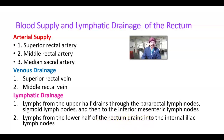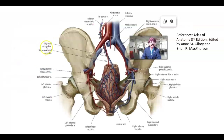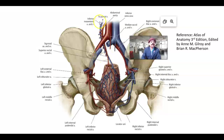Here we are seeing the blood vessels. The superior rectal artery is a branch of the inferior mesenteric artery. The superior rectal vein is a tributary of the inferior mesenteric vein, which is a tributary of the splenic vein, which is a tributary of the portal vein.